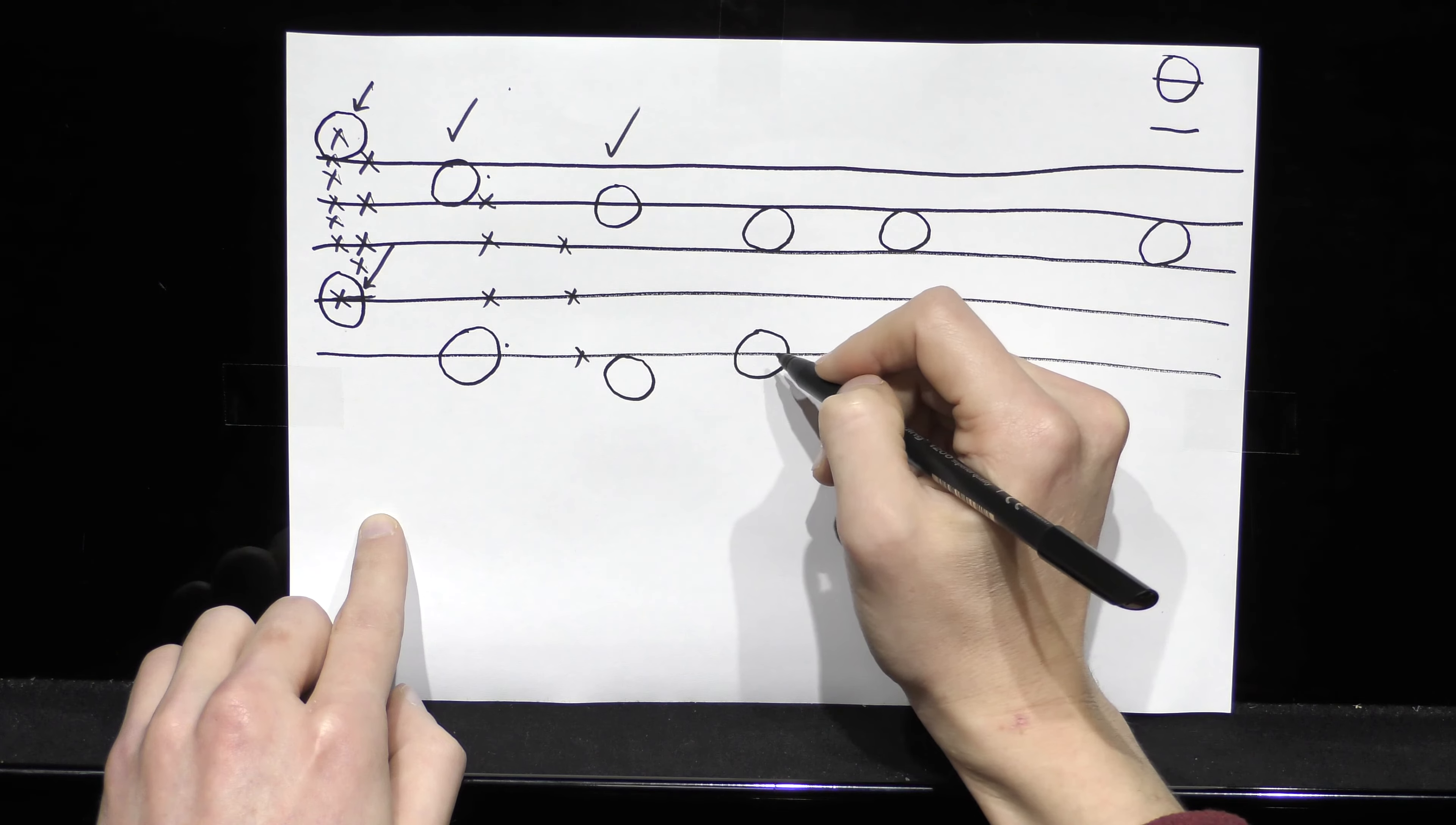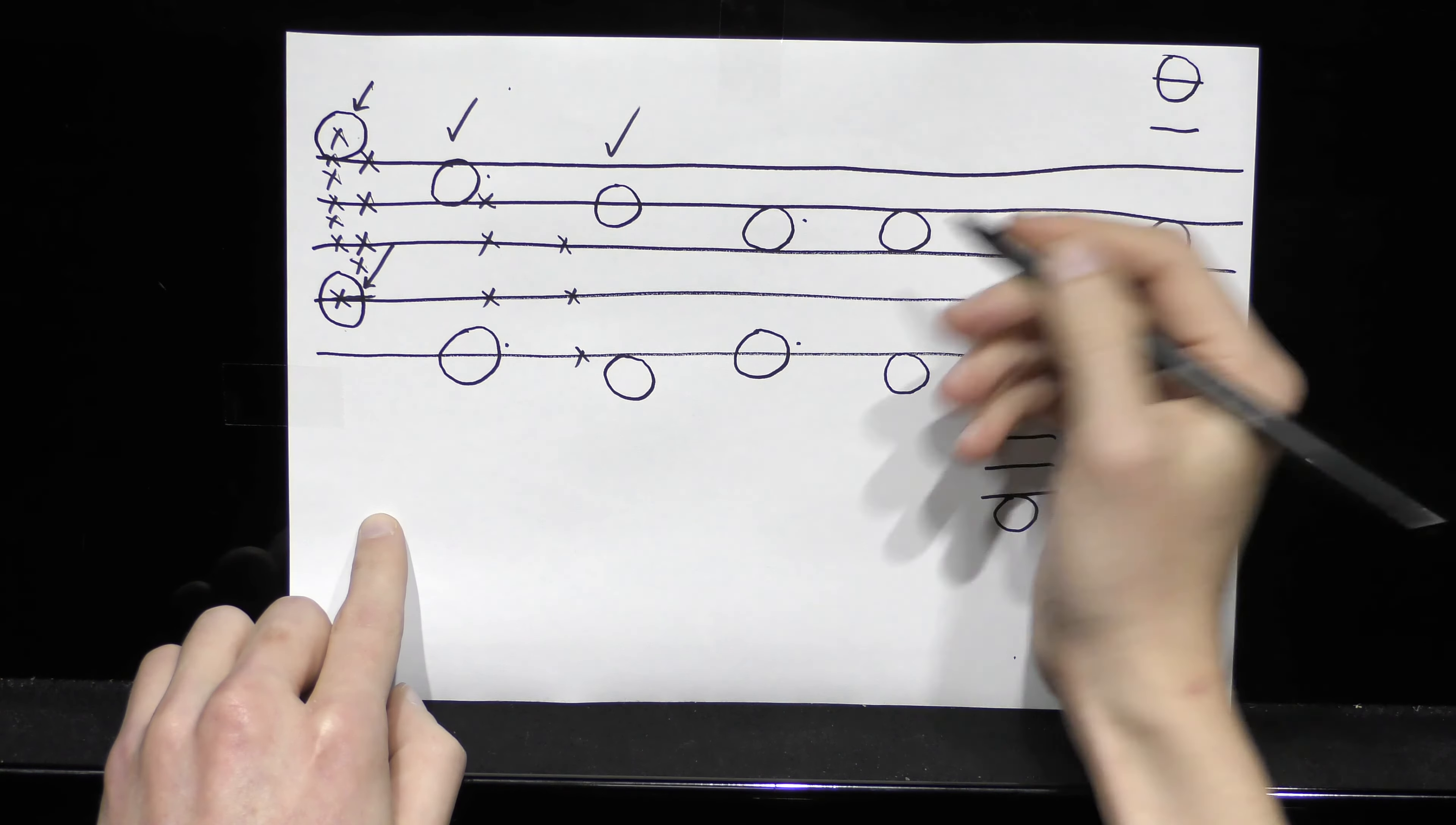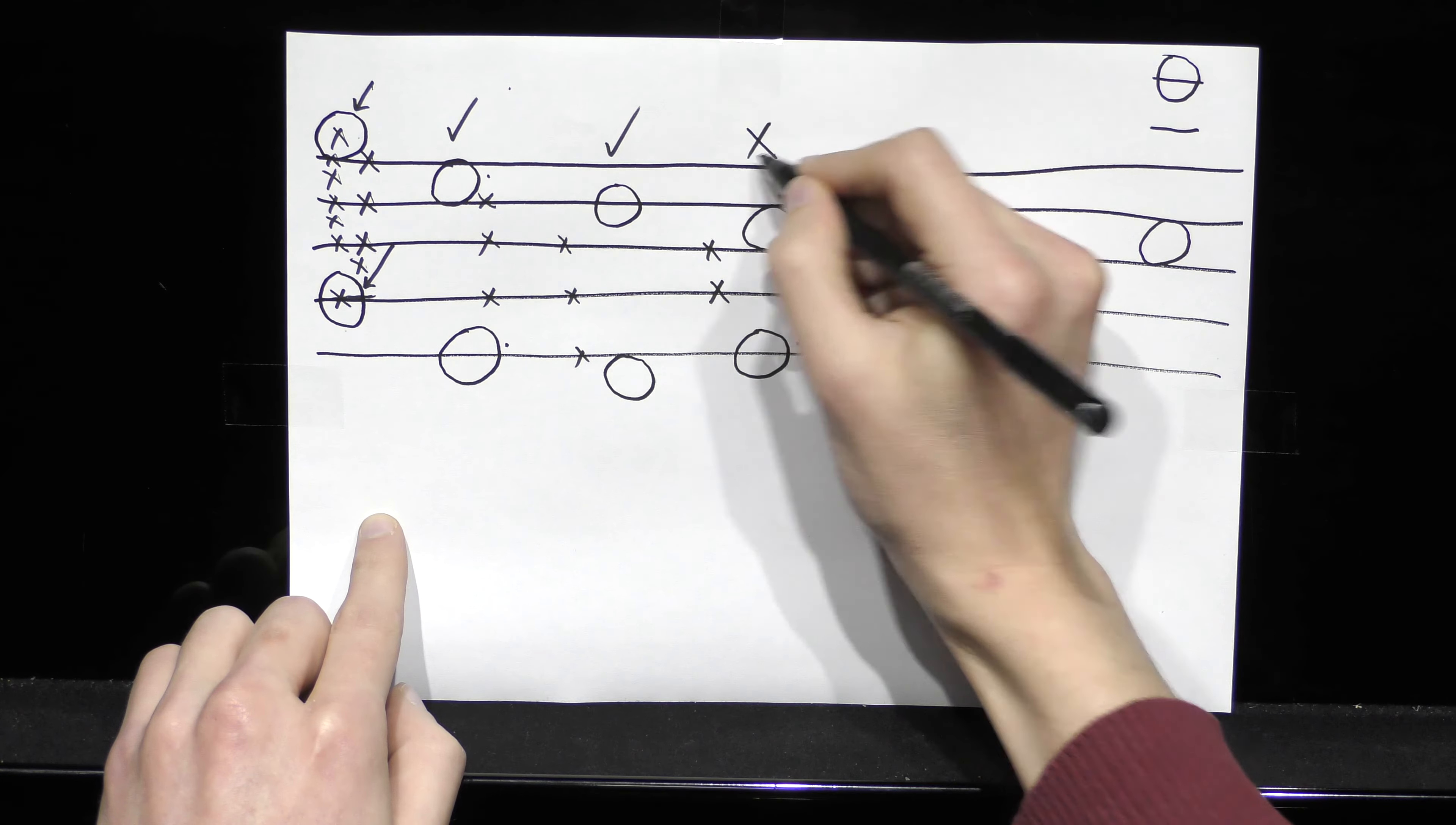What about this here? We have one note on a line, one note on a space, so it's looking good, but we only have two lines between, so this is not an octave.